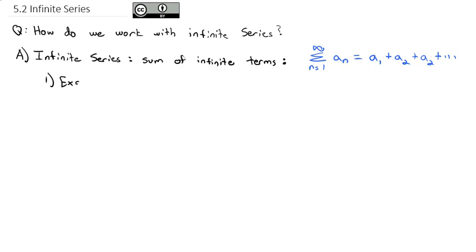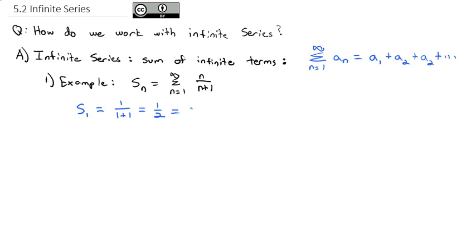An example of this might be the sum as n goes from 1 to infinity of n over n plus 1. If I want the first sum, that's just the first term: 1 over 1 plus 1, which is 1 half, or as a decimal, 0.5. The second sum takes the first term, 1 half, and adds the second term — putting 2 in for n gives 2 over 2 plus 1 — so 1 half plus 2 thirds, which equals about 1.17.